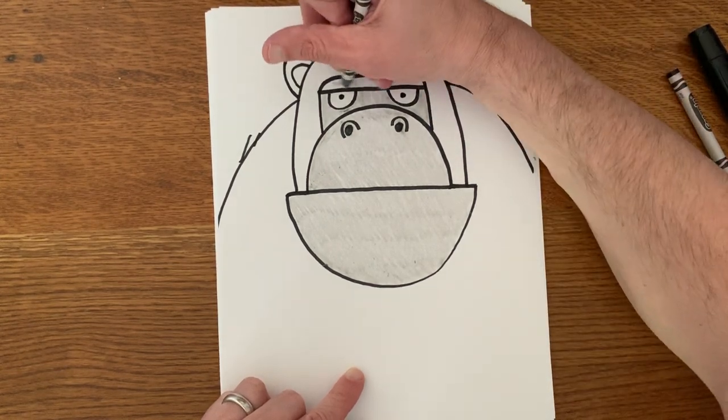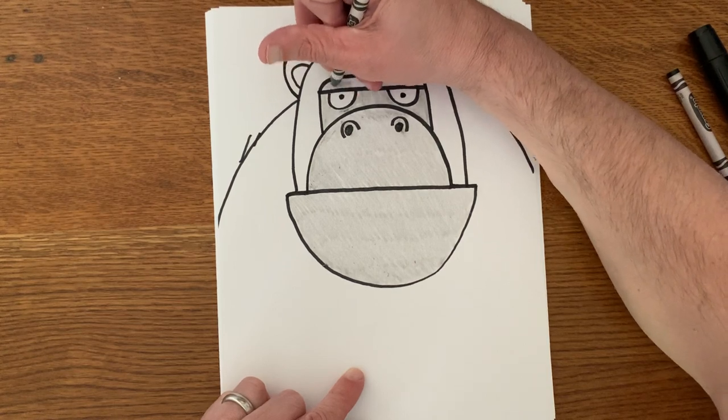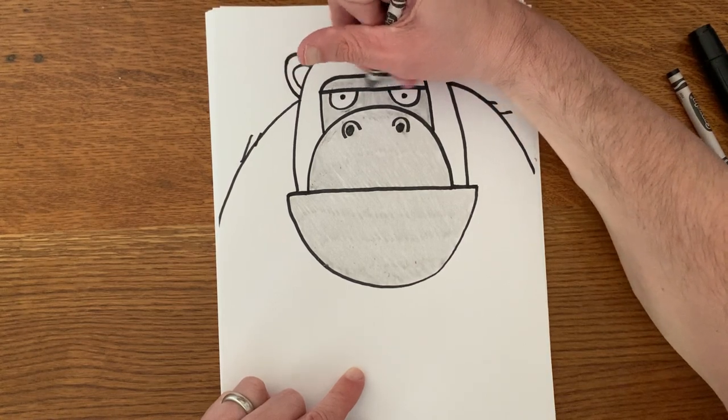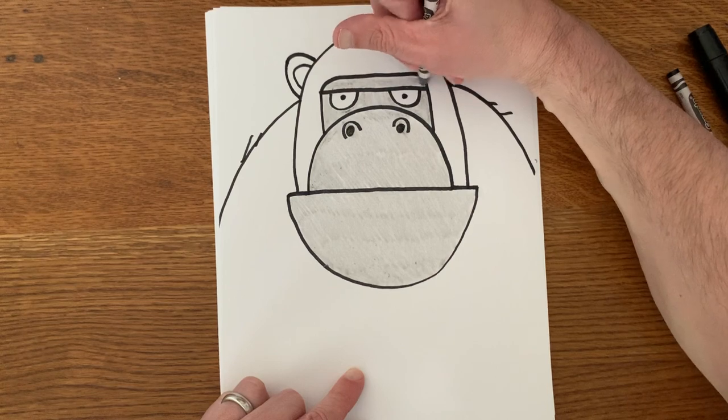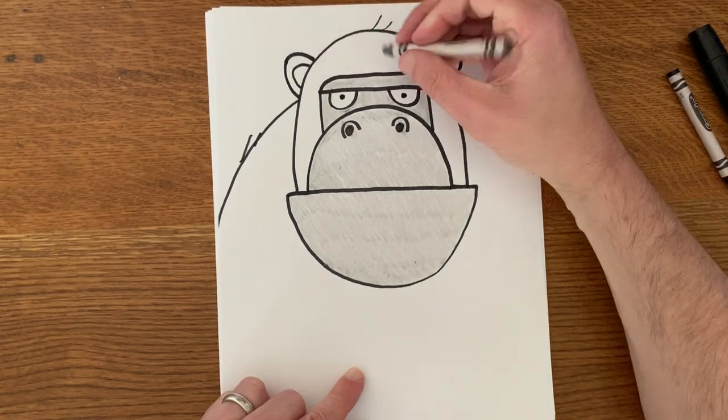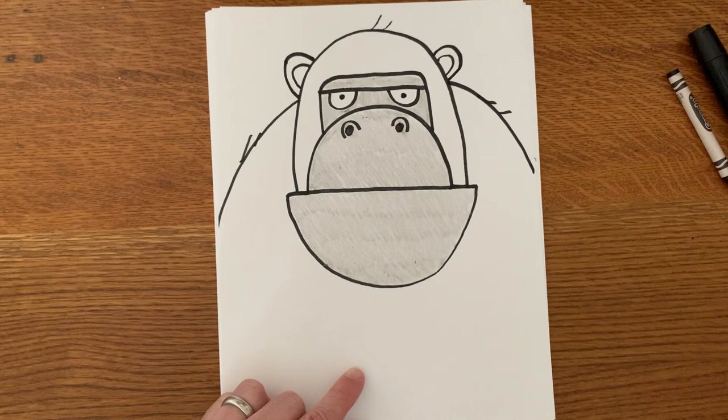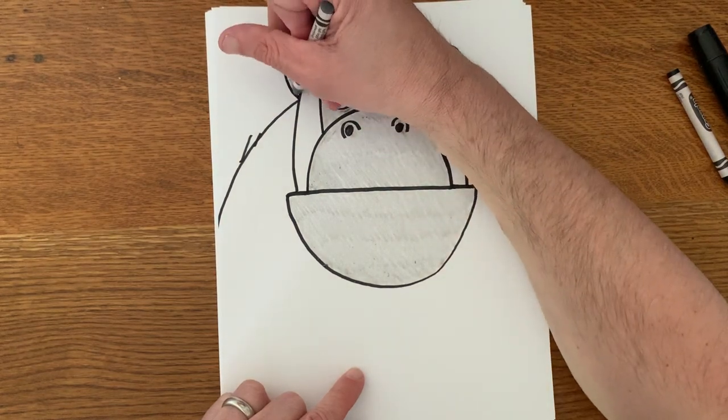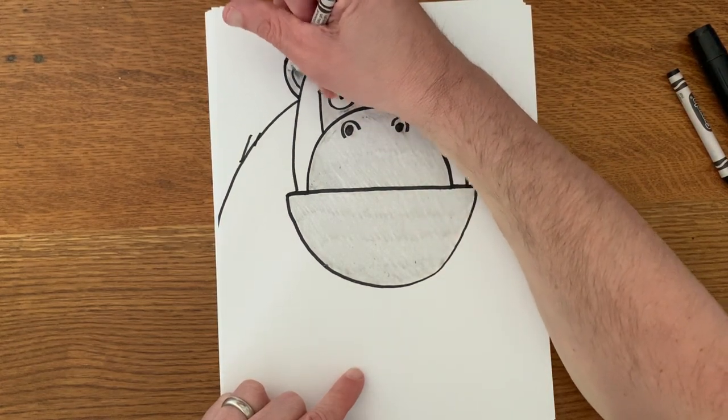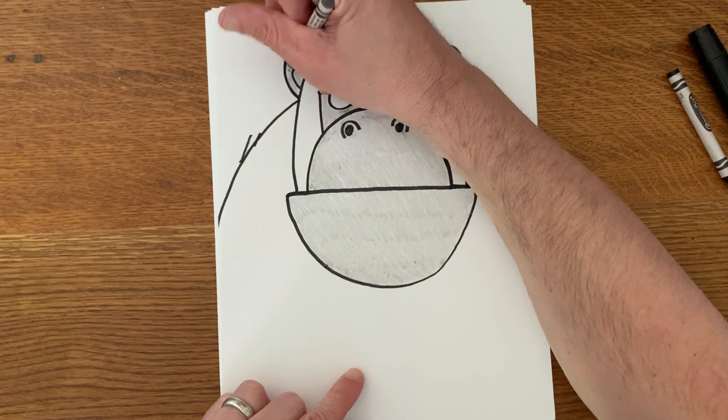And then of course, above the eyes, I'm going to color that gray. It's the skin as well. And then the last thing to color gray is going to be his ears. And I'm just going to go ahead and color both parts of the ear gray.